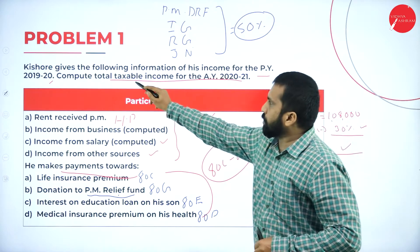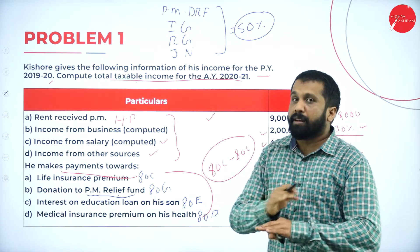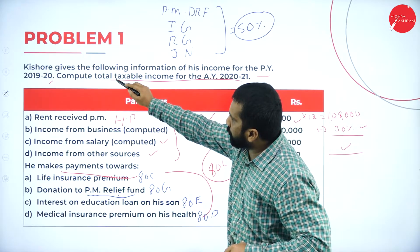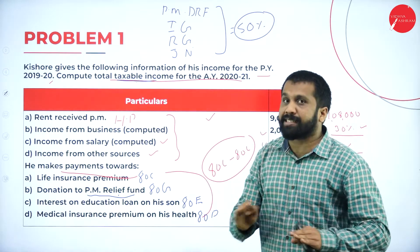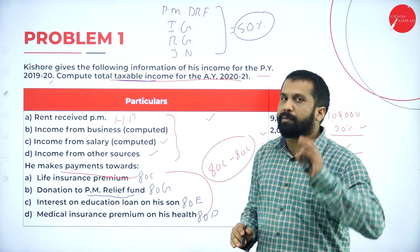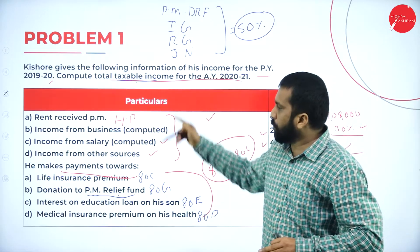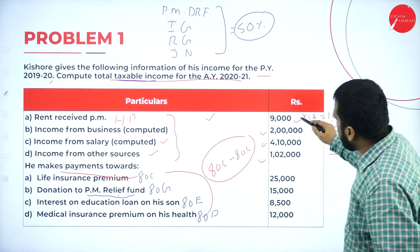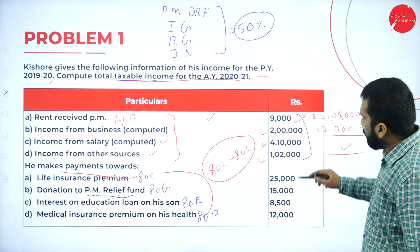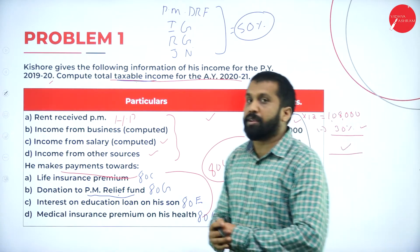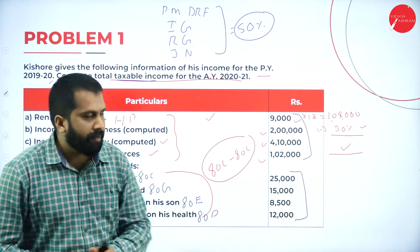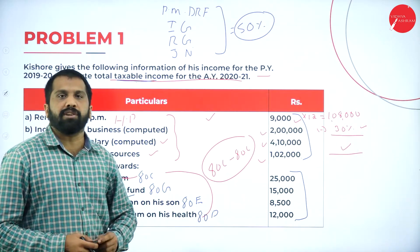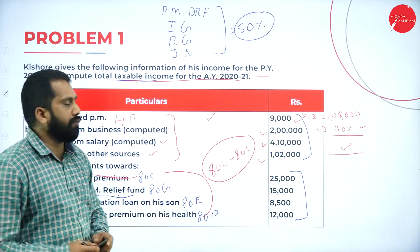We are supposed to find out total taxable income — they have not asked us to prepare the tax amount. Taxable income means: add all income heads, then minus deductions. That is your taxable income. We don't require the tax slab calculation for this part.